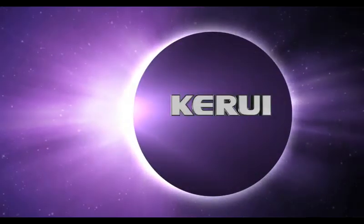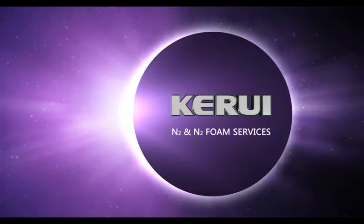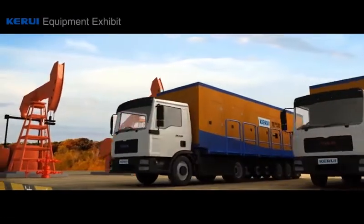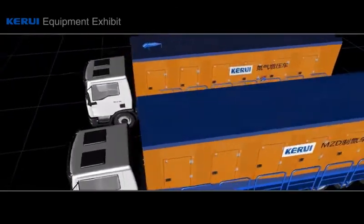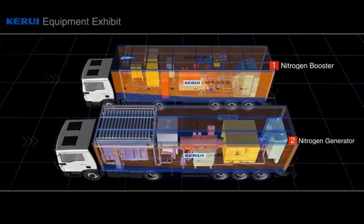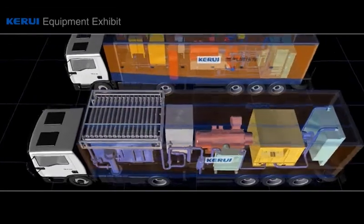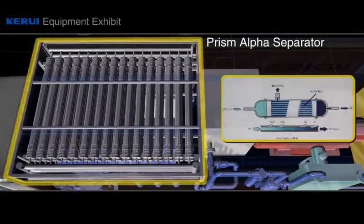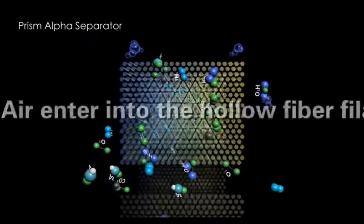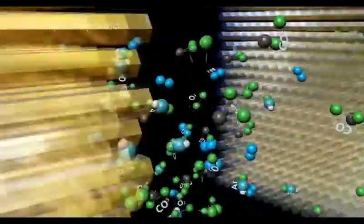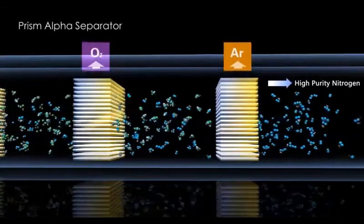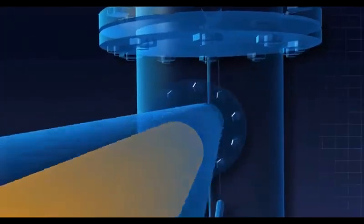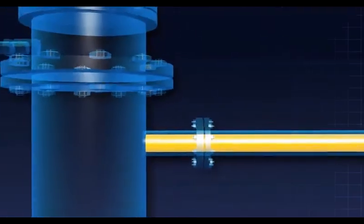Nitrogen and nitrogen foam services have wide applications; operations and production services of all types of oil fields have pertinently good effects. Nitrogen generation is realized by means of membrane separation, using the difference in coefficient of solubility and diffusivity of various gases in the hollow fiber membrane, from which nitrogen is separated from the air. A booster then pressurizes the nitrogen to a certain purity and makes it ready for use. High pressure nitrogen and foam solution are mixed by a foam generator which forms stable nitrogen foam liquid.